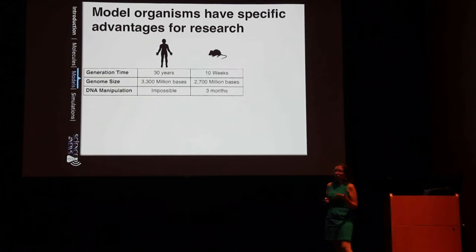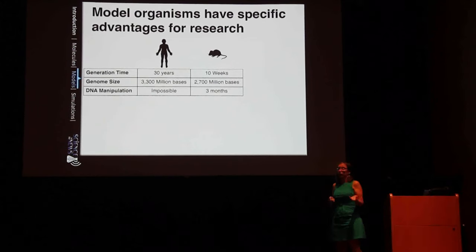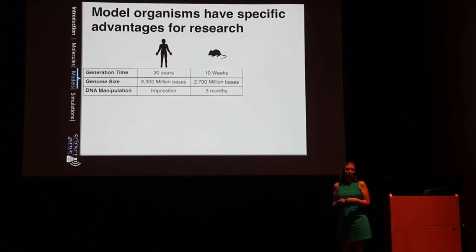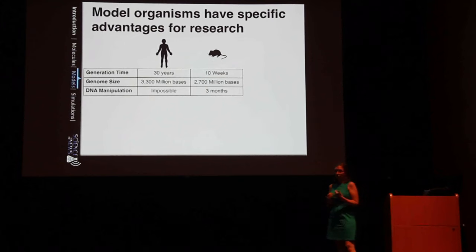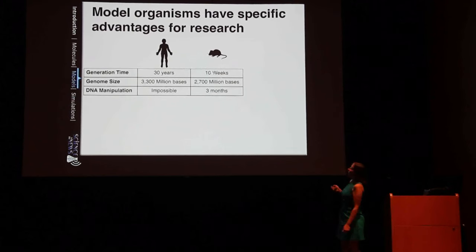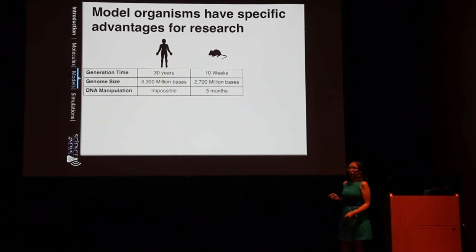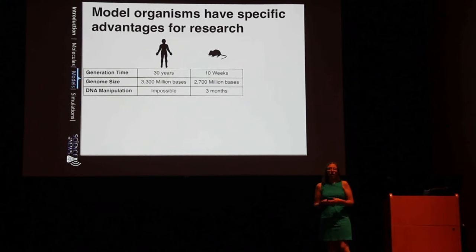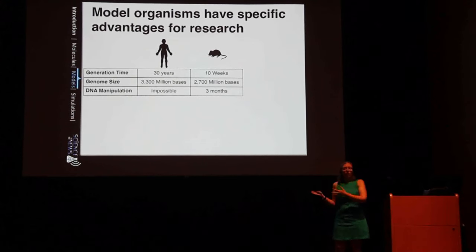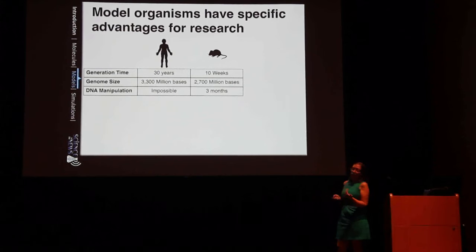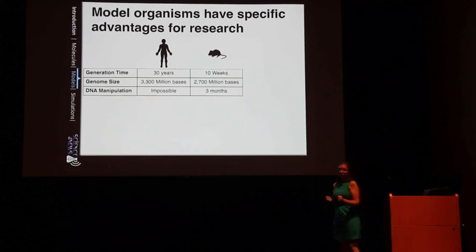The manipulation of human DNA is for both ethical and technical reasons essentially impossible. In contrast, we can use the common house mouse, which has a much faster generation time of only 10 weeks. The genome size is a bit smaller at 2,700 million bases. And DNA manipulation — say I want to make a specific change in the DNA to reflect a change that happens in a human disease — takes about three months, and there are companies that will do this for you.